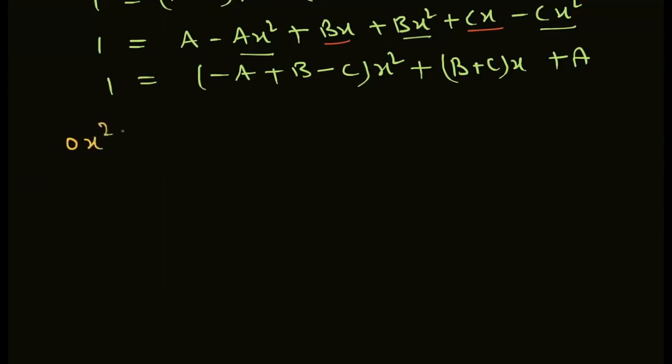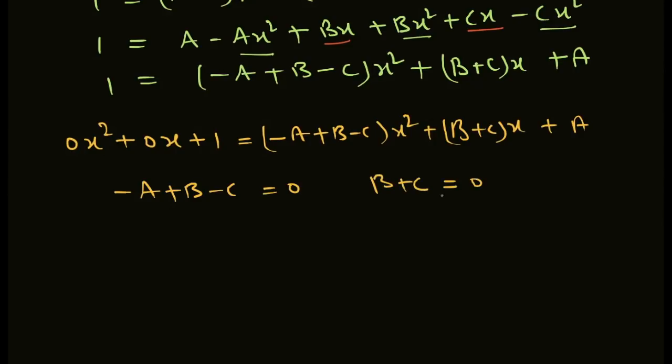We have 0x squared plus 0x plus 1 equals (negative A plus B minus C)x squared plus (B plus C)x plus A. Comparing coefficients: negative A plus B minus C equals 0, B plus C equals 0, and A equals 1.